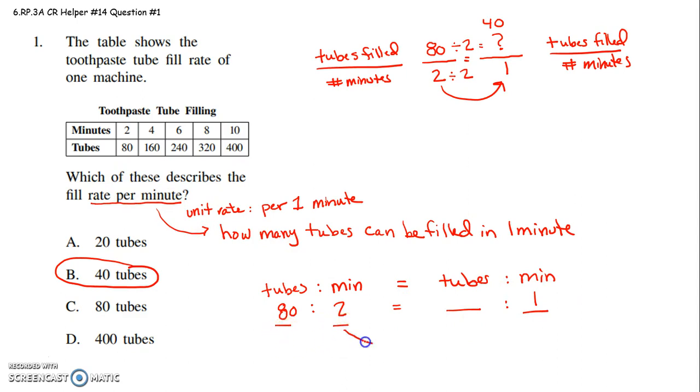So then I look here. What's the connection between the 2 and the 1? 2 divided by 2 is 1. So what do I have to do with the 80? 80 divided by 2 is 40.